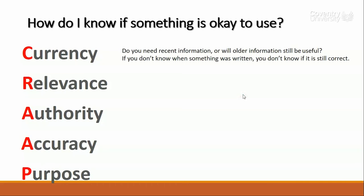Starting with currency. Currency is all about the timeliness of the information. When you're looking at a particular source, check how old that information is and consider whether you're only interested in the most recent information, and whether that information is likely to be out of date.